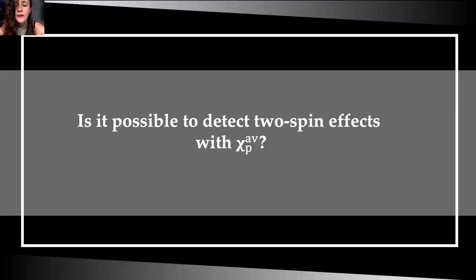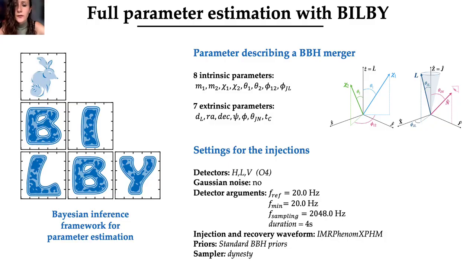The aim of this work is to test the ability of current interferometers to detect the signature of two precessing spins with this new average definition of χp. And in order to do that, we performed a large number of software injections in synthetic data, and performed a full parameter estimation with BILB, which is a Bayesian inference library for gravitational wave astronomy. Binary black hole merger is fully characterized by 15 parameters, 8 intrinsic parameters such as the mass, spins, tilt angles, and 7 extrinsic parameters such as the luminosity distance, sky location, and inclination.